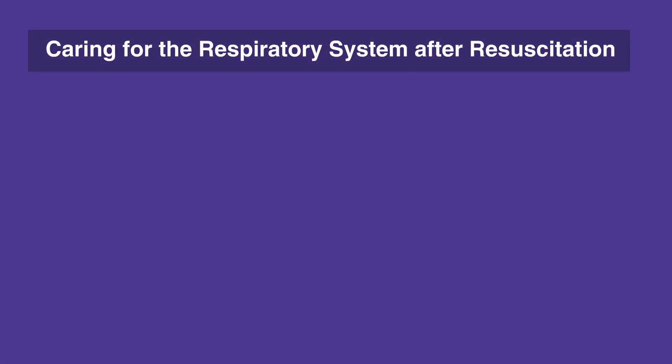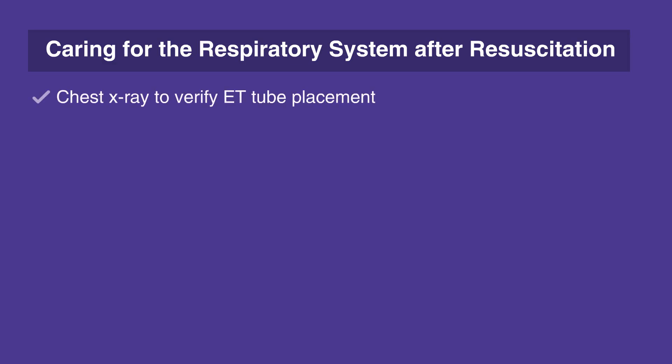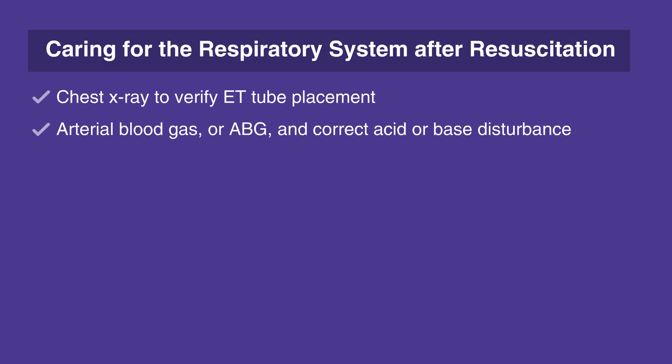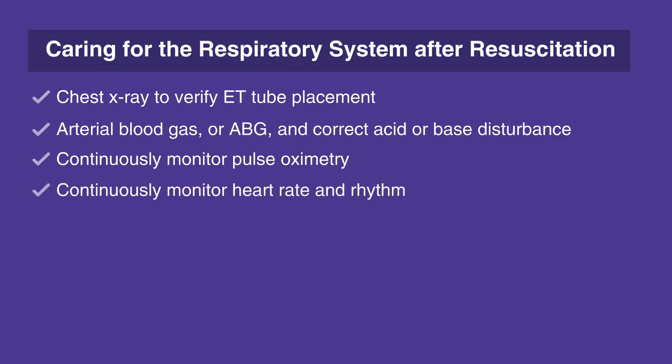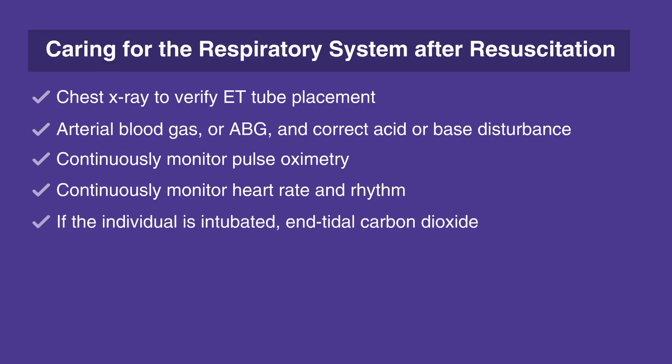When caring for the respiratory system after resuscitation, follow this checklist. Chest x-ray to verify ET tube placement. Arterial blood gas, or ABG, and correct acid or base disturbance. Continuously monitor pulse oximetry. Continuously monitor heart rate and rhythm. If the individual is intubated, end tidal carbon dioxide.